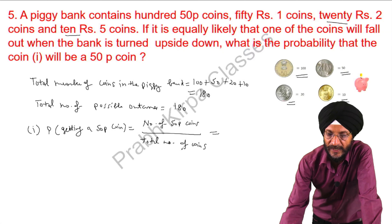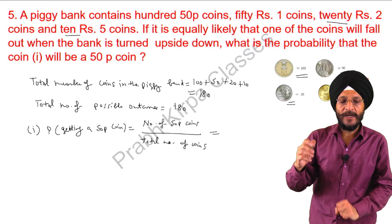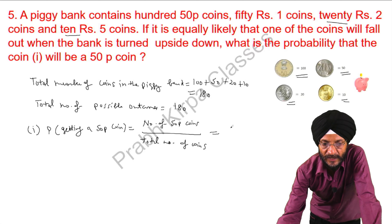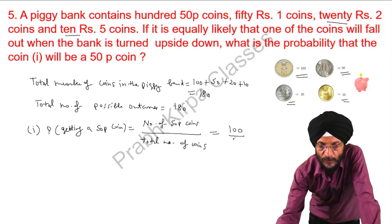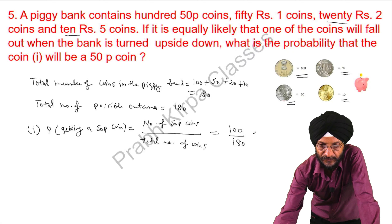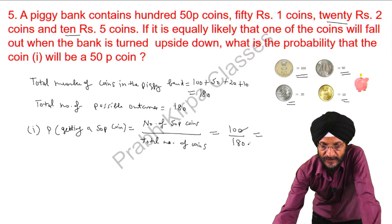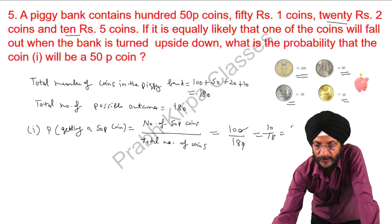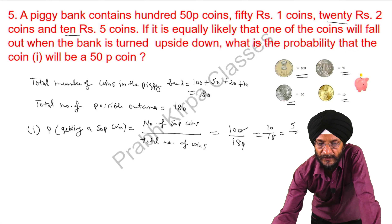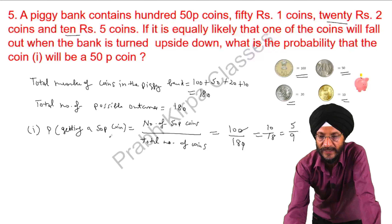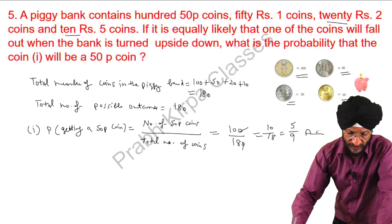On the denominator, we will write the total number of possible outcomes. The number of 50 Paisa coins is 150, and the total number of coins is 180. Simplifying, 150 over 180 gives us 10 over 18, and dividing both sides by 2 gives us 5 over 9. So the probability of getting a 50 Paisa coin is 5/9. This is the answer to the first part.